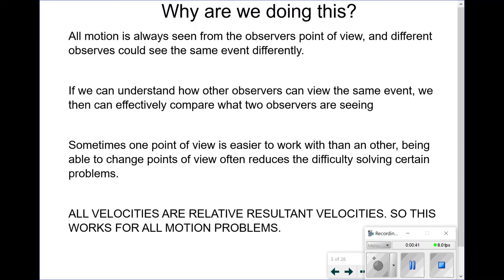Why are we doing this? Because all motion is always seen from an observer's point of view, and different observers could see the same event differently. If we can understand how other observers view the same event, we can effectively compare what they see to what we are seeing. Sometimes one point of view is easier to work with than another — not better or more correct, just easier. Being able to change points of view will often reduce the difficulty in solving certain problems.